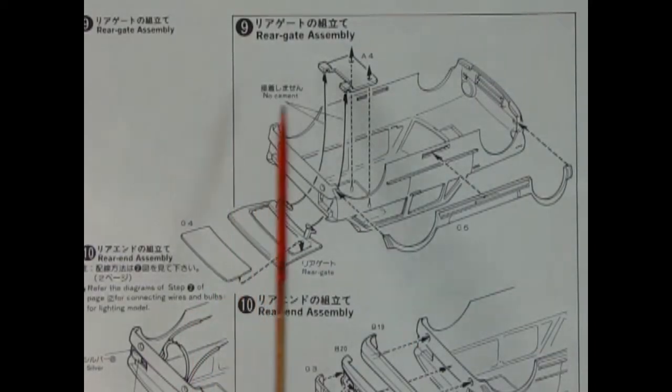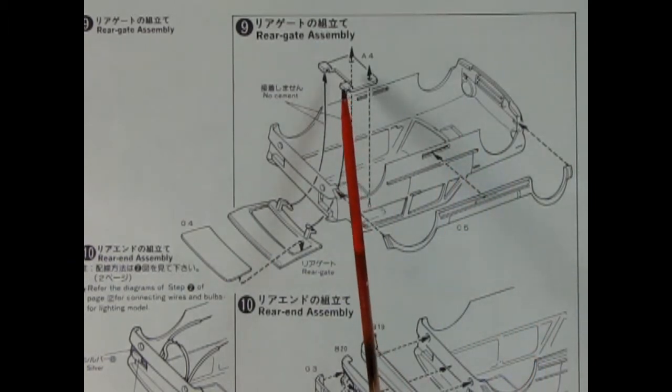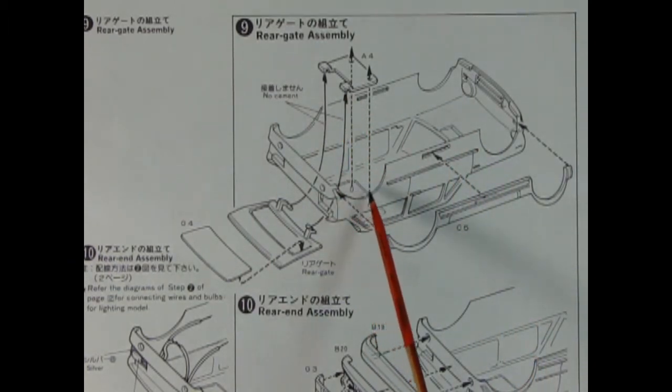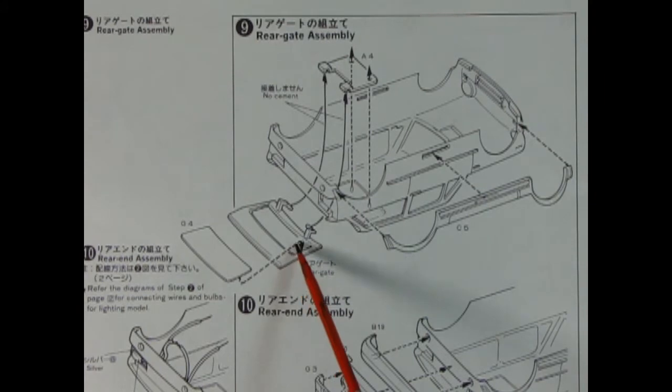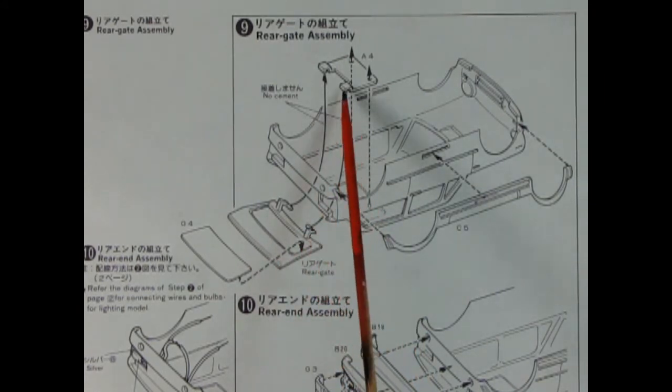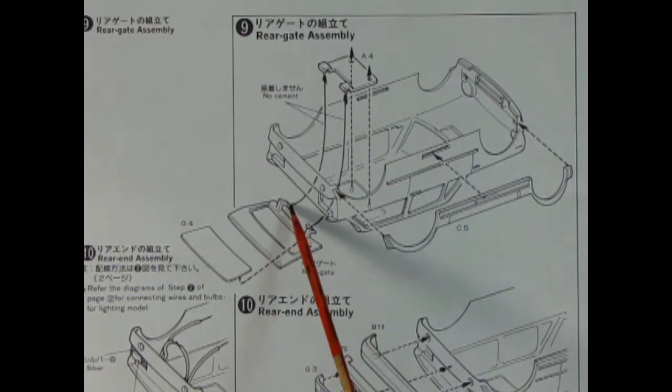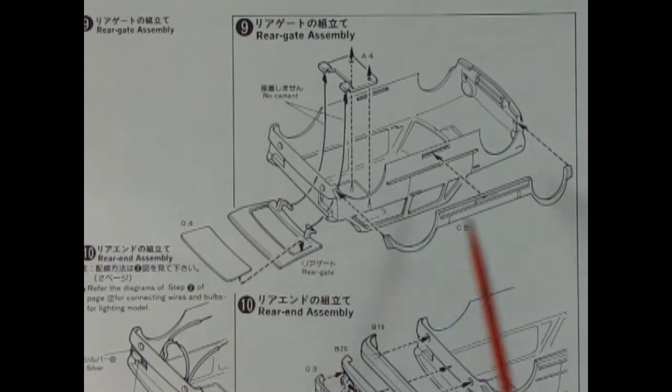Step nine is the rear gate assembly. Here we have the upper part of our hinge which will glue onto the roof of the car. You want to make sure that your rear gate is in place before this goes down because these little u-shape hooks hook into the little pins on our hinge. Then you end up gluing in the rear window and here's the side body moldings.